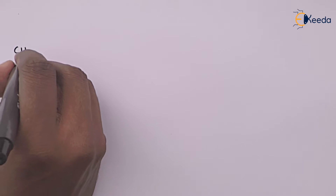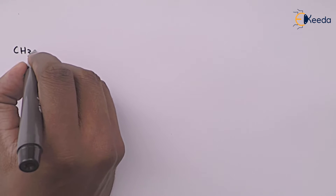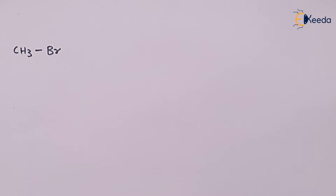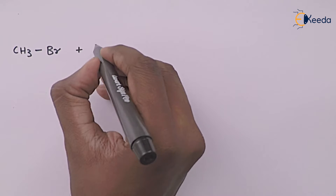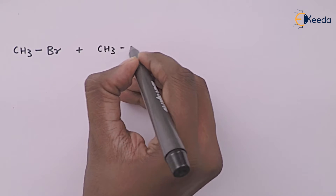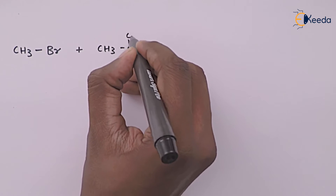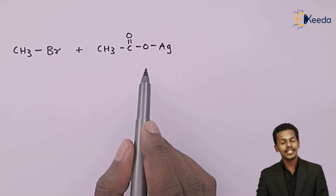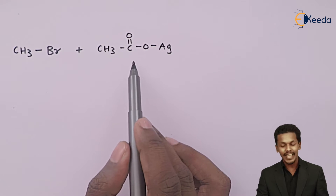For the example, let us consider the simplest case as we have used in previous lectures. Suppose we take CH₃Br (methyl bromide) and treat it with CH₃C(=O)OAg, which is known as the silver salt of acetic acid.